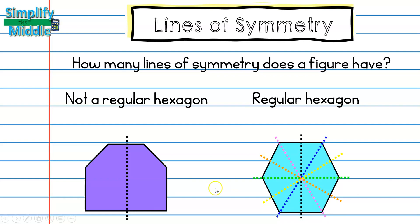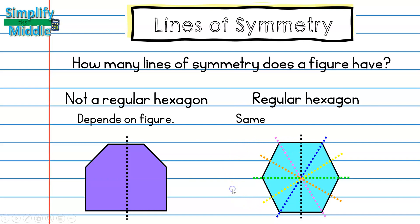Going back to count: one, two, three, four, five, six lines of symmetry. You may have noticed that for a figure that is not a regular polygon, it just depends on the figure — you have to try to fold it in your mind to see which way works. But for the regular hexagon, it has six sides and six lines of symmetry, so for a regular polygon, the number of lines of symmetry is the same as the number of sides.